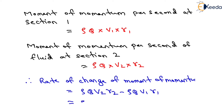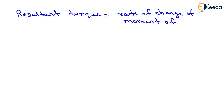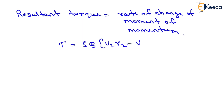Therefore, the rate of change of moment of momentum will be equal to Rho Q into (V2 R2 minus V1 R1). According to the Moment of Momentum Principle, the resultant torque equals the rate of change of moment of momentum. Therefore, T equals Rho into Q into (V2 R2 minus V1 R1).